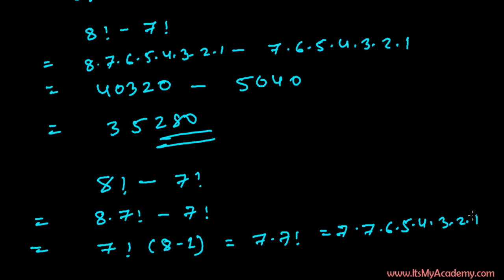So the answer will be 7 times 7 times 6 times 5 times 4 times 3 times 2, which equals the same 35,280. So however you solve it, you'll get the same answer.